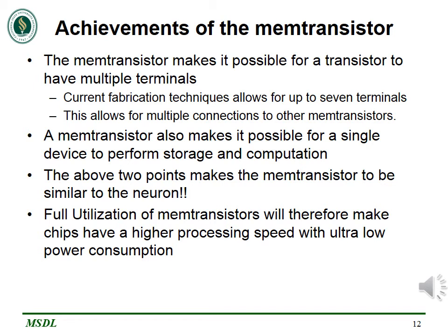The memtransistor makes it possible for a transistor to have multiple terminals. Current fabrication techniques allow for up to seven terminals, which is more than double the conventional transistors' three terminals, allowing multiple connections to other memtransistors. A memtransistor also makes it possible for a single device to perform both storage and computation, since the memtransistor has memristor properties. These two points make a memtransistor similar to a neuron. Full utilization of memtransistors will therefore make chips have higher processing speed with ultra-low power consumption, just like the neuron.